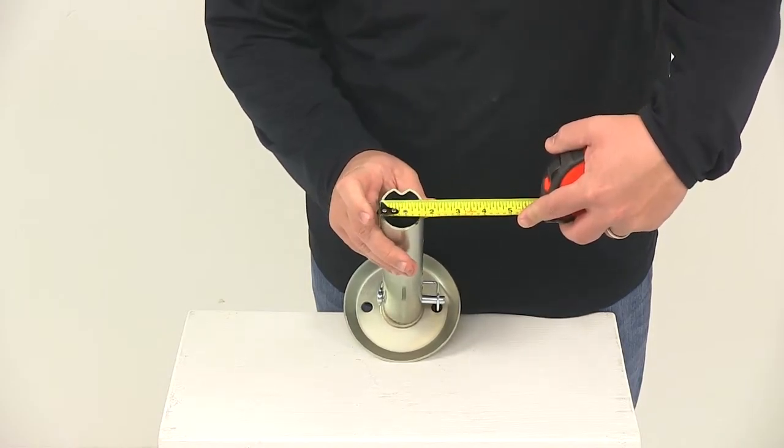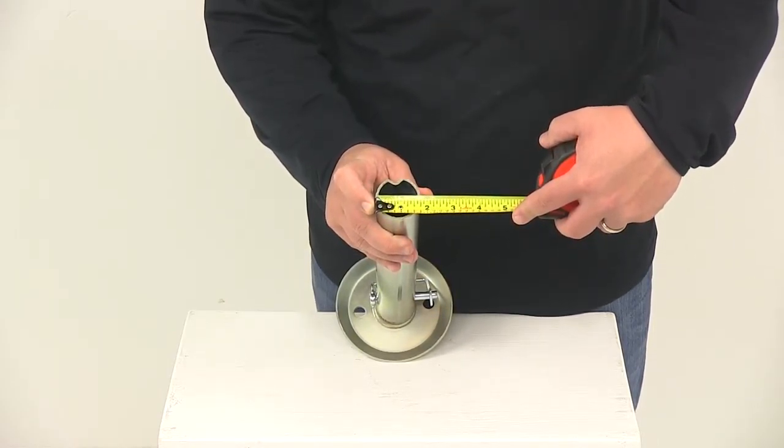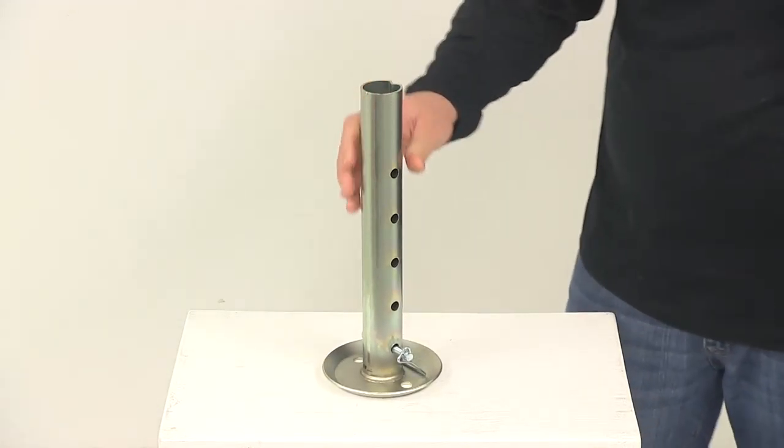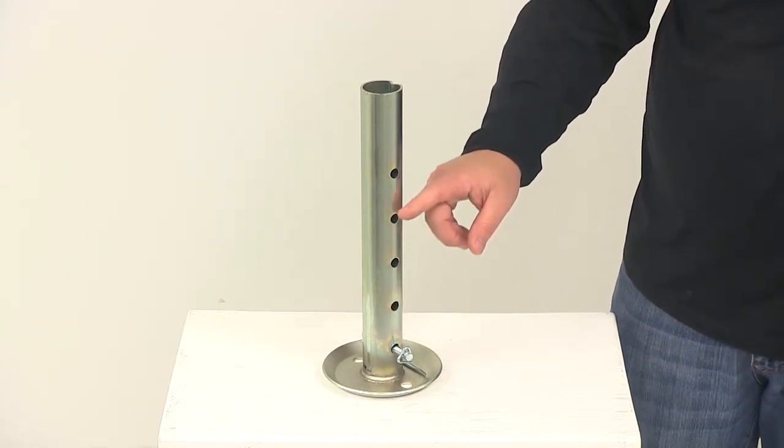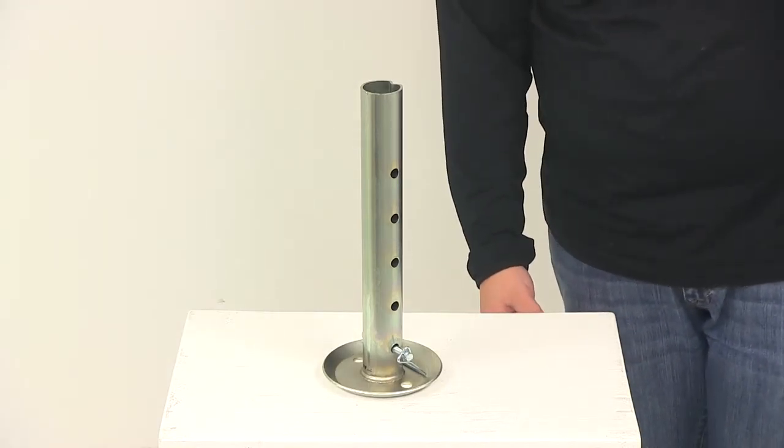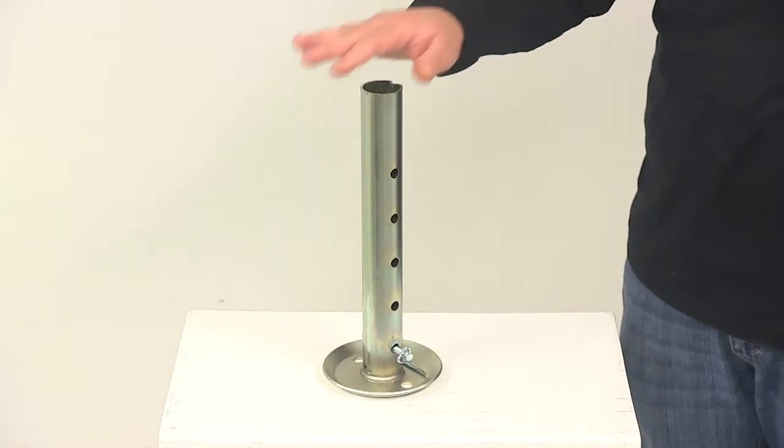The diameter of the tube measures one and three quarter inches, so again it is designed to fit inside of a two inch diameter inner tube on your jack. This drop leg features five adjustment holes. The distance between each hole is two inches center on center, giving you a total or maximum of up to eight inches when it comes to adjustment.